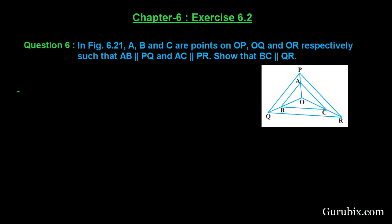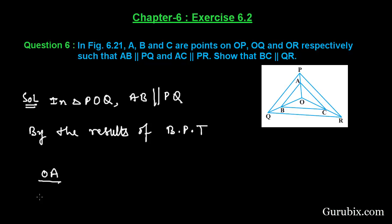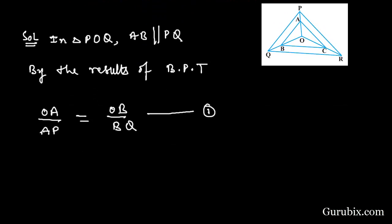Let us see how to solve this question. We shall start with triangle POQ. In this triangle, we are given that AB is parallel to PQ. Therefore, by the results of BPT, this means basic proportionality theorem, we have OA over AP equals OB over BQ. This is our equation number one.